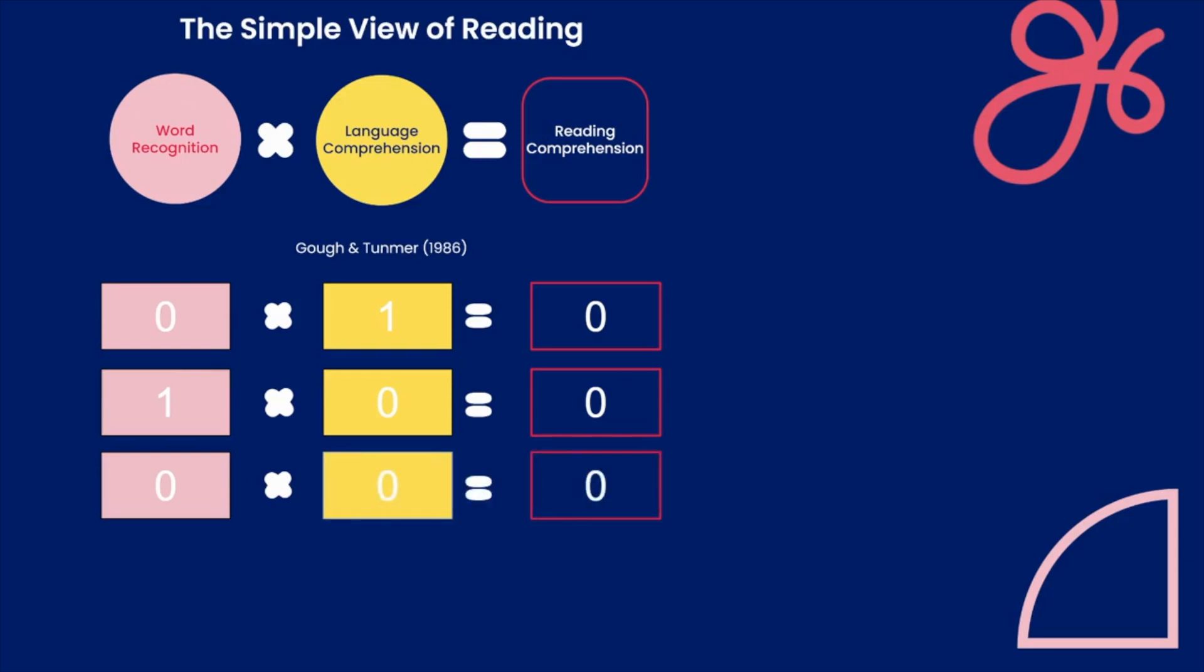What is super important to note in this situation is that many of our older struggling readers may not have started out with a profile of struggling with both language comprehension and decoding. When you think about the years of reading that these students have missed out on because they struggled with just decoding, you can begin to see the years of knowledge building, vocabulary building, exposure to complex syntax and structure of written language that these students have missed out on.